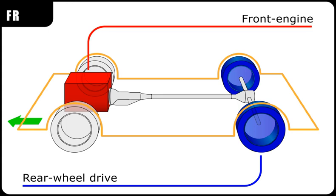Four-wheel drive layouts. Car drivetrains where power can be sent to all four wheels are referred to as either four-wheel drive or all-wheel drive. Front-engine, four-wheel drive: The front-engine, four-wheel drive layout, abbreviated as F4 layout, places the engine at the front of the vehicle and drives all four road wheels. This layout is typically chosen for better control on many surfaces, and is an important part of rally racing as well as off-road driving. Most four-wheel drive layouts are front-engined and are derivatives of earlier front-engine, rear-wheel drive designs.